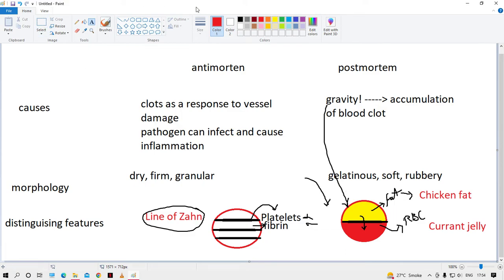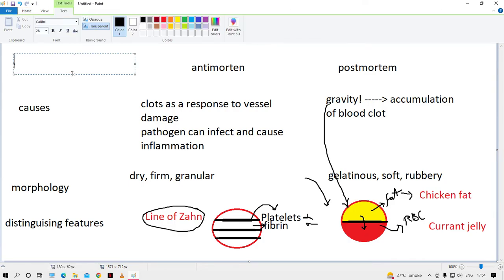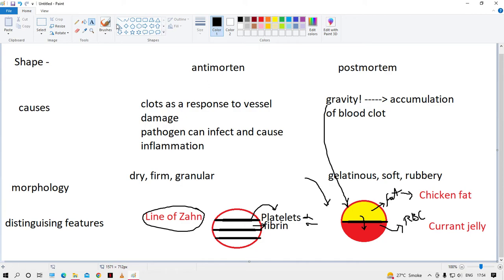Then we have the shape. For the antemortem clot, the shape can be anything. For example, if there's the vessel and there's the injury, it will take a shape like this. If the injury was this long, then the shape would be like this. Any shape can be taken by the antemortem clot.